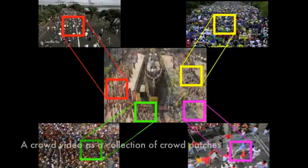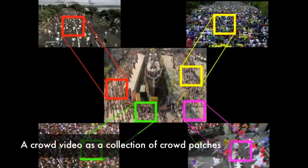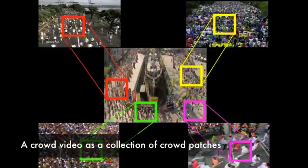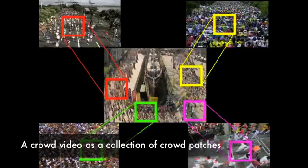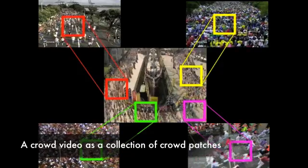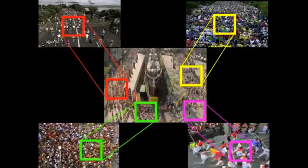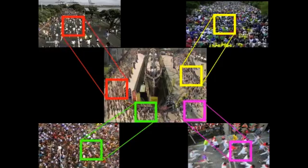The idea we pursue in this work stems from the fact that any given crowd video can be thought of as being a spatio-temporal mosaic of previously observed videos. The algorithm works by generating crowd behavior priors for a specific patch of video after finding similar crowd patch regions in the database.